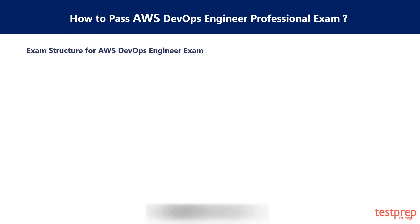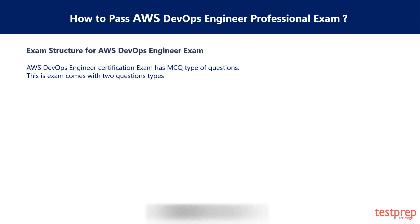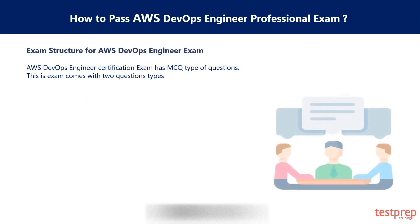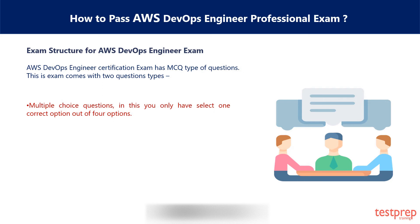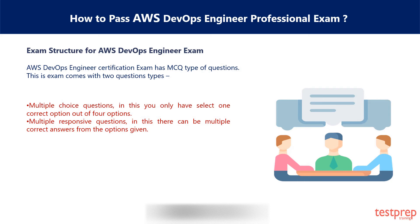Regarding the Exam Structure for the AWS DevOps Engineer Exam: The AWS DevOps Engineer Certification Exam has MCQ-type questions and comes with two question types. 1. Multiple choice questions — you only have to select one correct option out of four options. 2. Multiple response questions — there can be multiple correct answers from the options given.